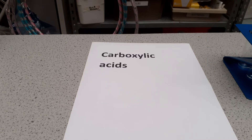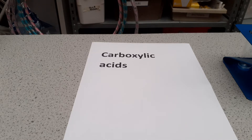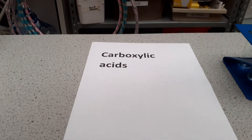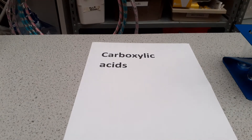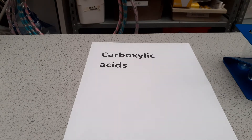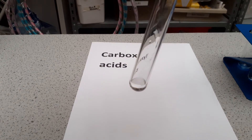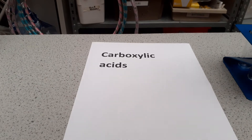Carboxylic acids are in topic 7, organic chemistry. We're going to look at the reactions of carboxylic acid and compare them with hydrochloric acid. The carboxylic acid I'm going to use is ethanoic acid. I have three test tubes of each — both acids are one molar, so they're the same concentration. We try to use the same amount of each so we can compare the speed of the reactions.